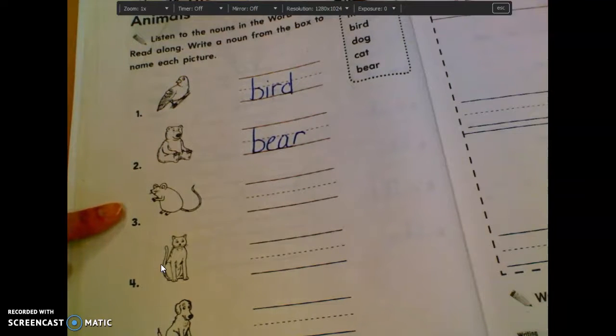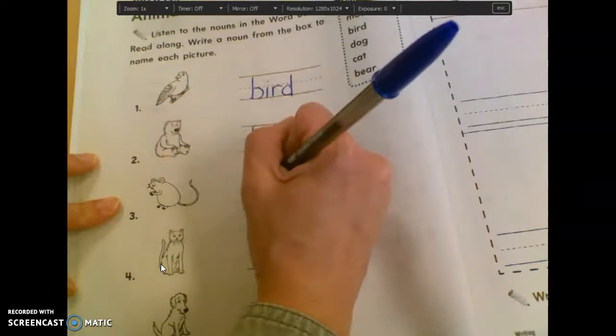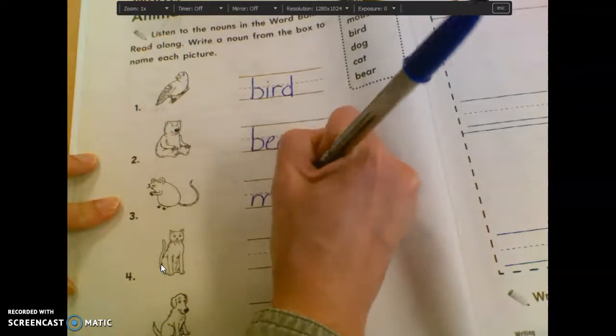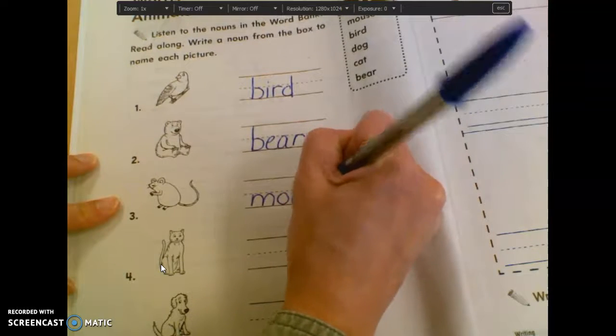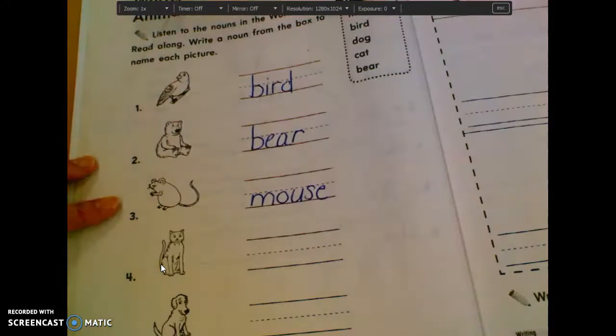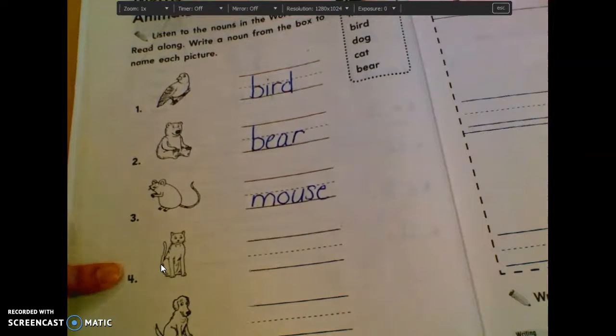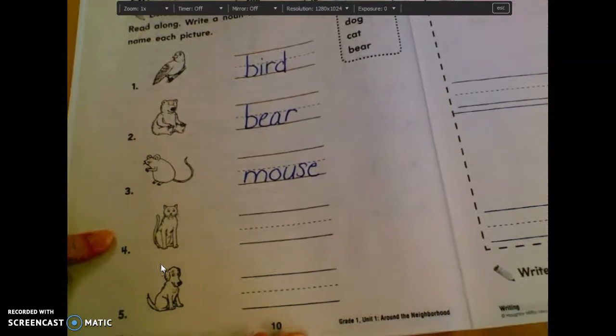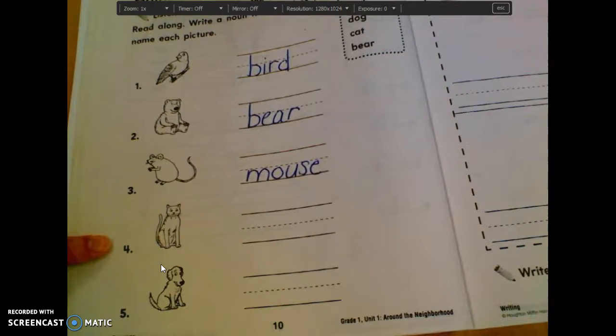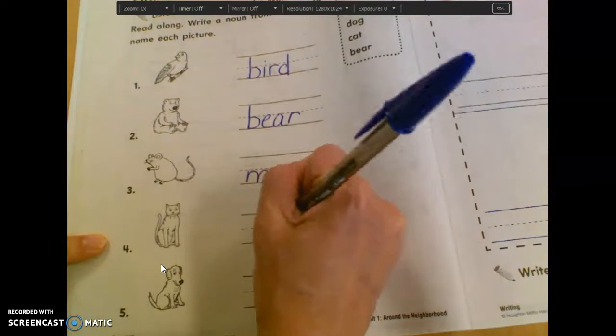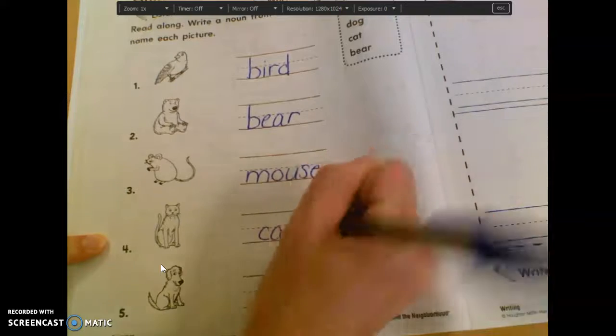What is picture number three? Mason. M-O-U-S-E is mouse. What is picture number four? Caden. Cat. Very good. C-A-T is cat.